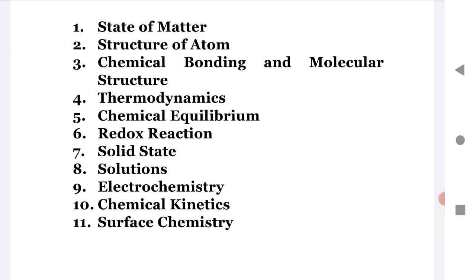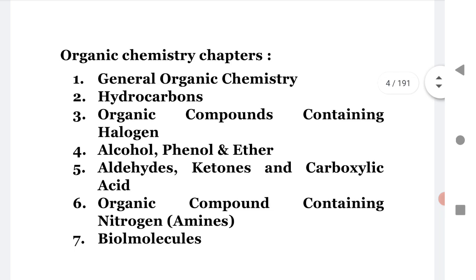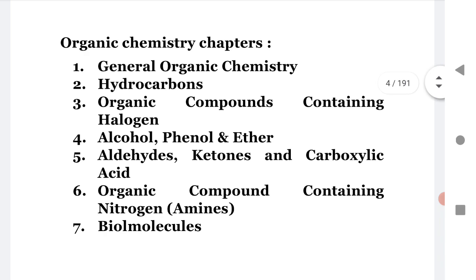Organic chemistry chapters: general organic chemistry, hydrocarbons, organic compounds containing halogens, alcohols, phenols, ethers, aldehydes, ketones, carboxylic acids, organic compounds containing nitrogen and amines. Some parts of organic nitrogen compounds are deleted, but primary amine, secondary amine, tertiary amine are not deleted. Practice biomolecules.